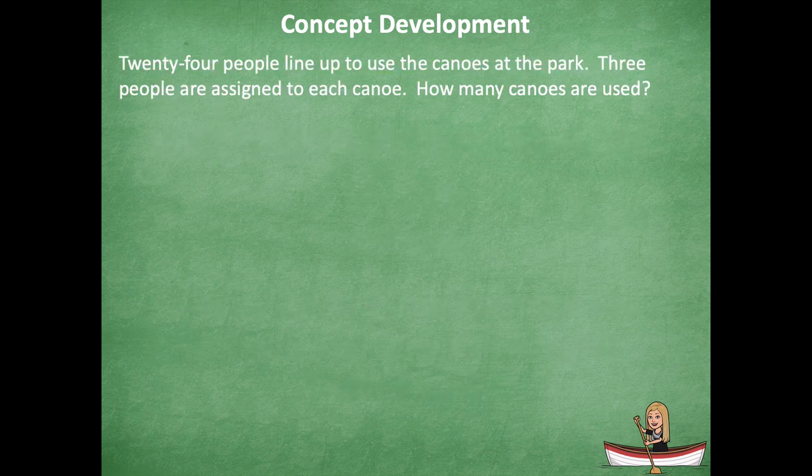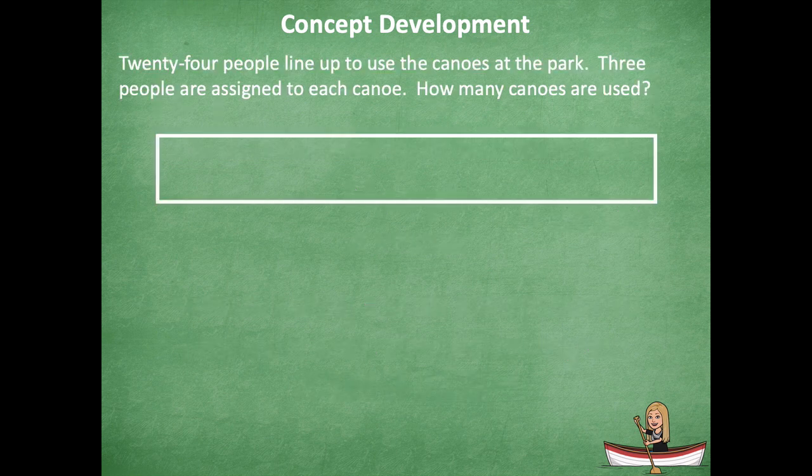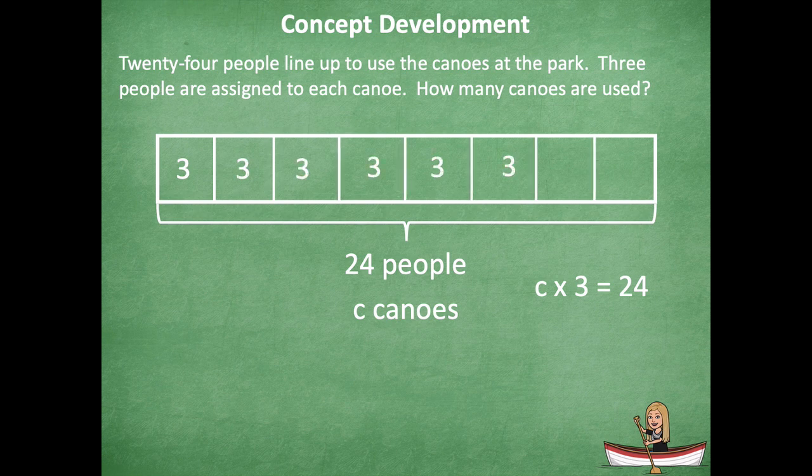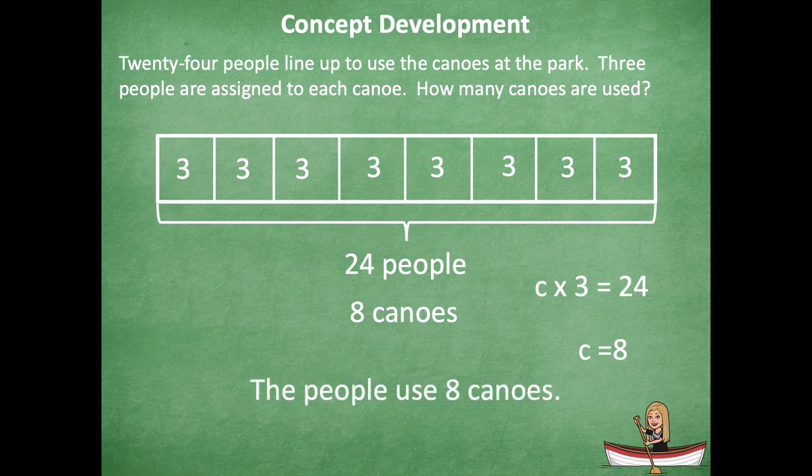Okay. So let's look at another problem. Oh, sorry. Let's look at the same problem. We can set this up with three groups or one group with three, 24 total people. C represents canoes. C times three equals 24. So now I'm going through and solving the same way, counting by threes until I get to 24. So C now equals eight. And then there's eight canoes. So the people use eight canoes.